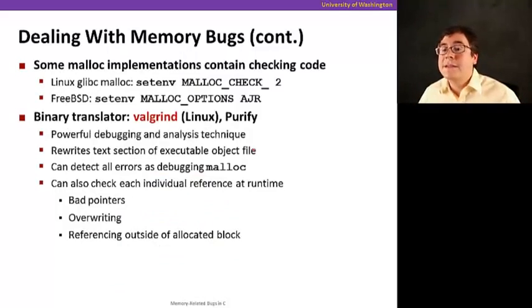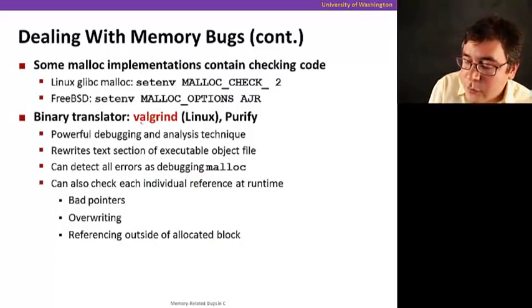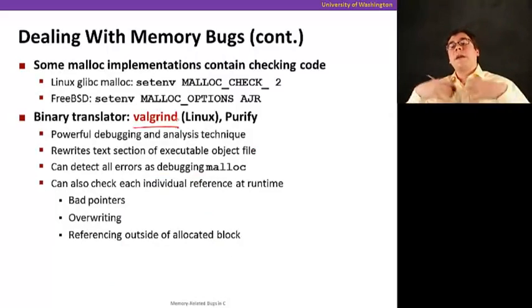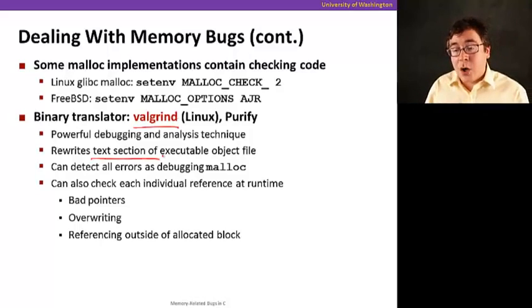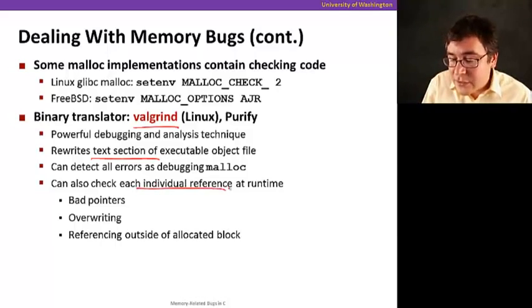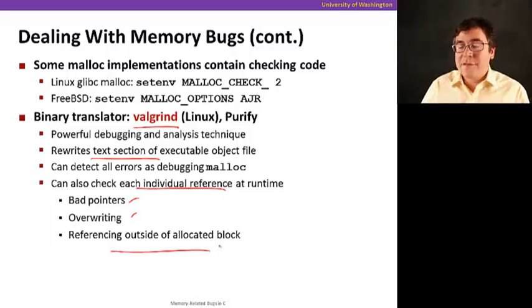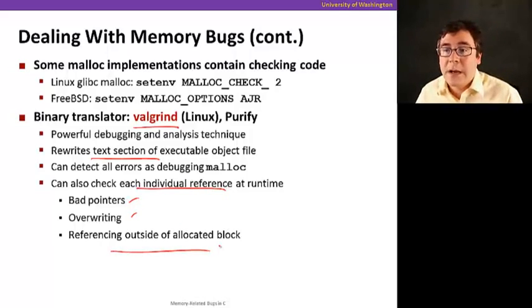So there is another one. There is this tool called Valgrind that actually does binary instrumentation of your program and actually monitors much more of the execution, so it's pretty powerful. It actually rewrites the text, the code, to do special things. And it can check, and since it instruments your whole program, it can check each individual reference at runtime, things like bad pointer overwriting and referencing outside of allocated block and so on.